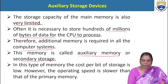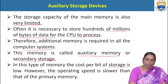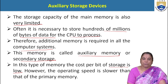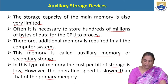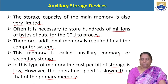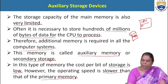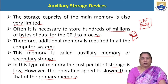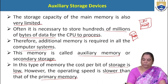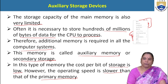In auxiliary memory, the cost per bit of storage is low, making it very inexpensive. However, the operating speed is slower compared to primary memory. Whenever a user wants to execute a program stored in auxiliary memory — for example, a hard disk — the program must first be loaded from secondary storage to the main memory, so that the program and data are readily available to the CPU for execution.